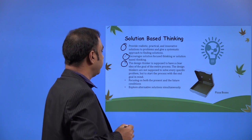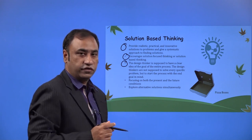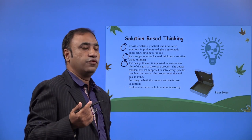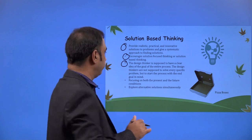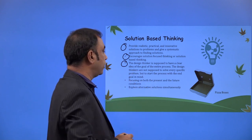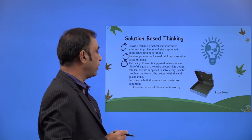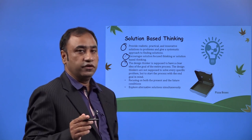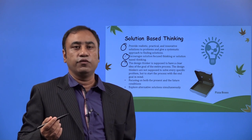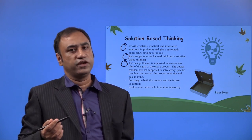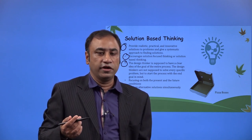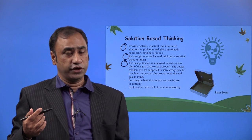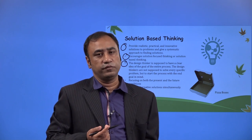A design thinker is supposed to have a clear idea of the goal of the entire process. A person thinking with a design thinking objective will have a clear idea of what they are trying to achieve. Design thinkers are not supposed to solve every specific problem, but to start the process with the end goal in mind. The end goal in mind means keeping the solution as the end goal of a particular problem — when you do that, you start thinking with a solution-based mindset.